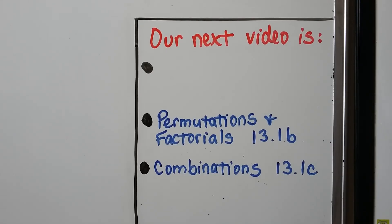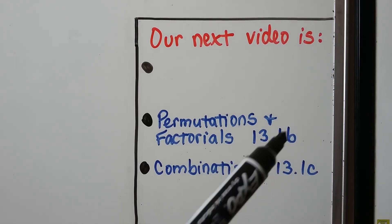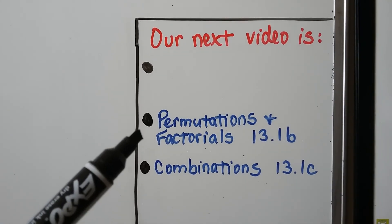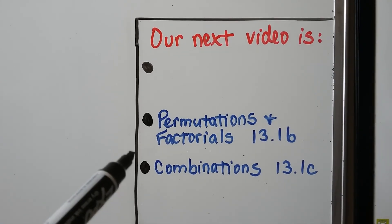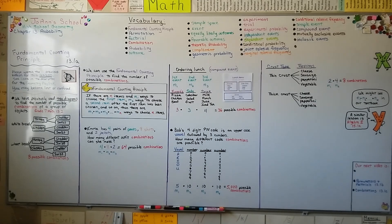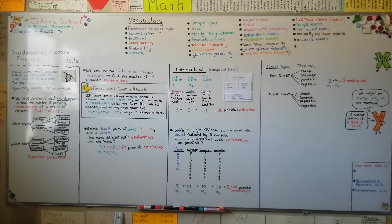Our next lesson is going to be the second part of 13.1 as the B. Then we're going to follow it with the C. We're going to talk about permutations and factorials. Factorials have an exclamation point. Then we're going to talk about combinations. I hope you're doing well and I'll see you for the next part of the lesson. Bye.